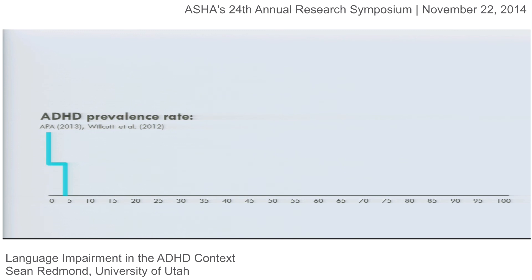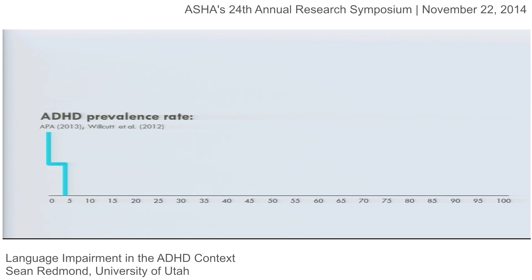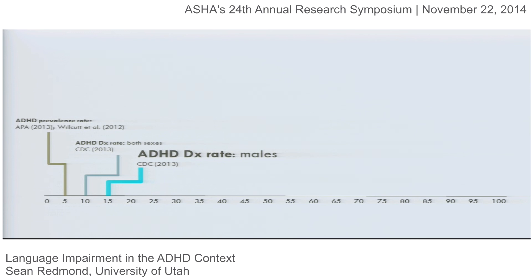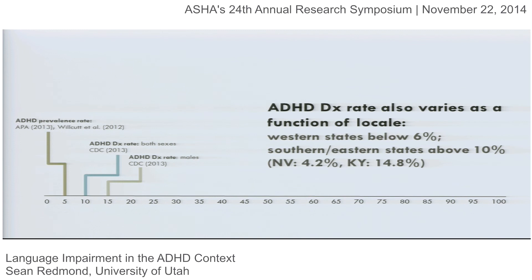I'm going to lay out prevalence rates and co-occurrence rates from 0% to 100%. Starting with the official prevalence rate of ADHD based on the APA and meta-analyses, we contrast that with the diagnostic rate for both sexes from 2013. The Centers for Disease Control reports that 15% of the male school-age population has been diagnosed with ADHD, and the diagnostic rate actually varies considerably across areas — western states including Utah have some of the lowest rates, while southern and eastern states have much higher values.